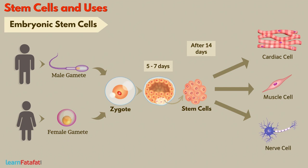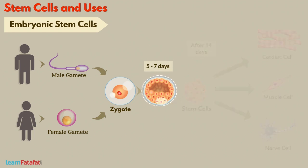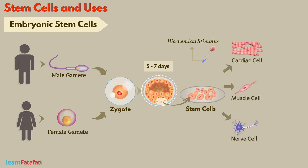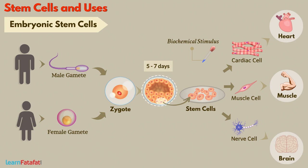It is possible to obtain stem cells well before the 14th day of embryonic development, usually during the 5th to 7th day. These cells are cultured in a laboratory with a suitable biochemical stimulus so as to produce fully functional specialized types of cells, tissues, and organs.